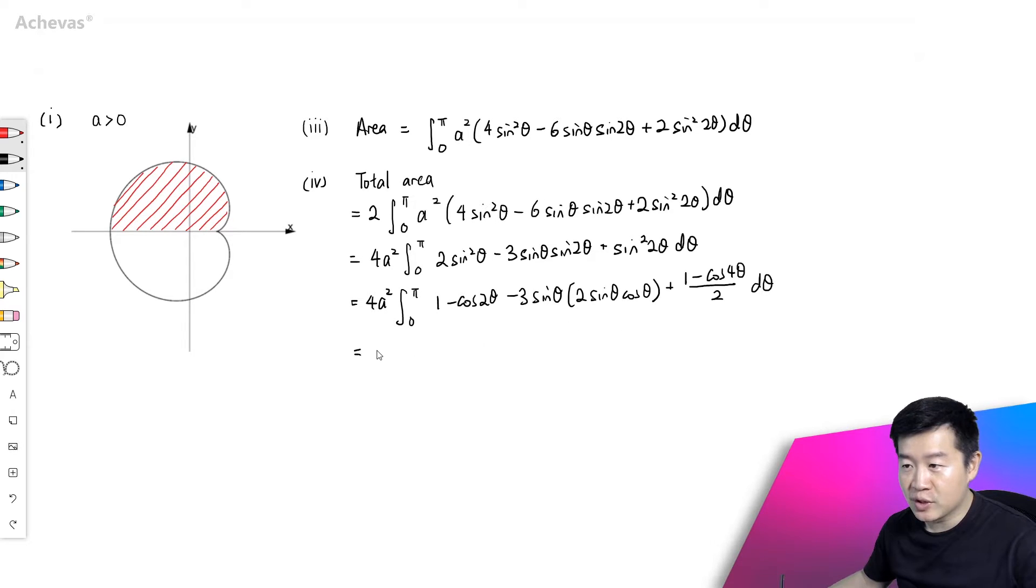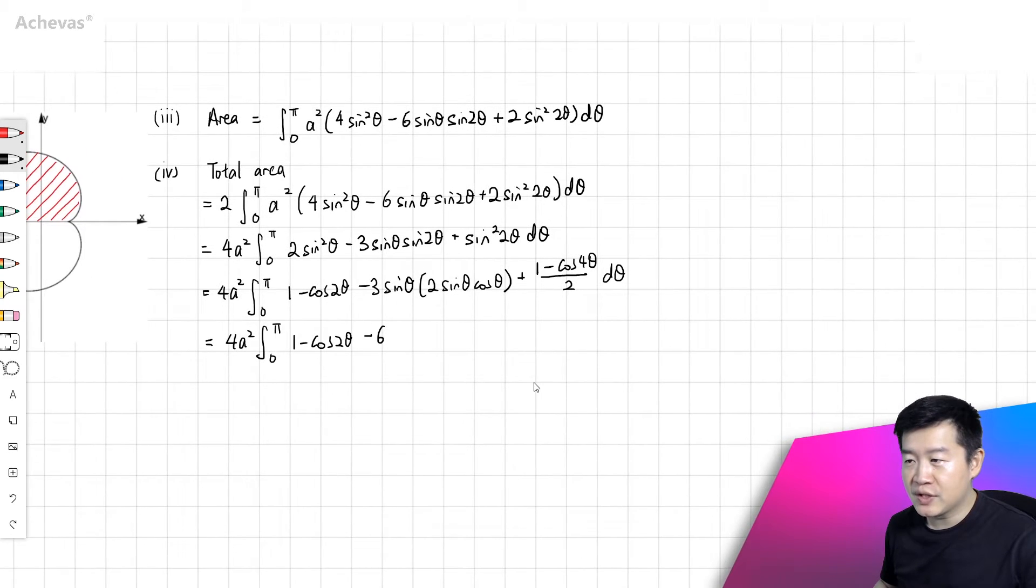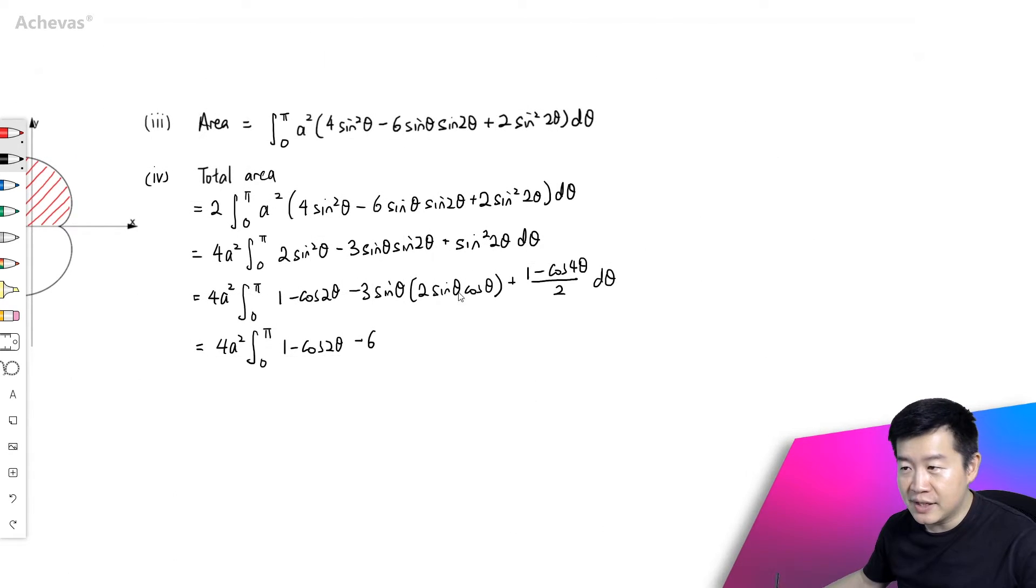So this is going to be equal to 4a² integration from 0 to π. This is okay, we can integrate this: 1 minus cosine 2θ minus 6 times 2, which is 6. Here, let's try to regroup.